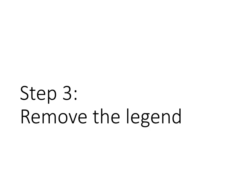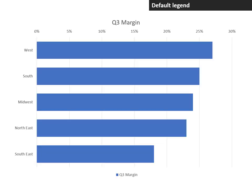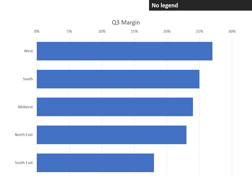Step three: remove the legend. At the bottom, there's a legend that is simply drawn from the data table. In most cases, it's not necessary in a bar graph because we're going to use a meaningful title to give the audience context for this chart. When we remove it, the bar chart gets bigger and has more presence on the screen for the viewer.